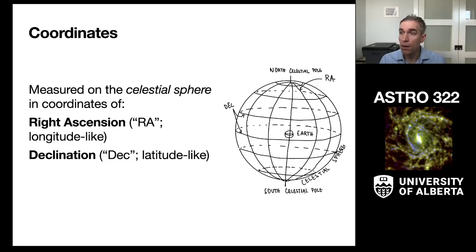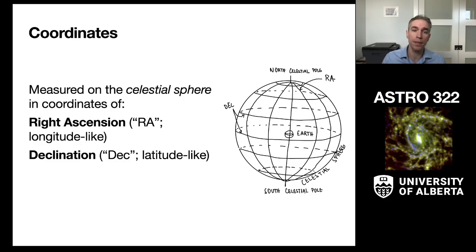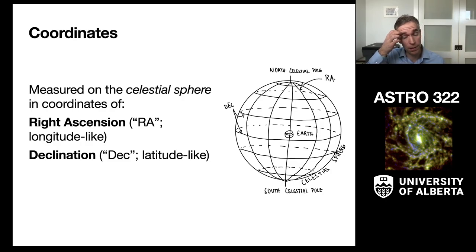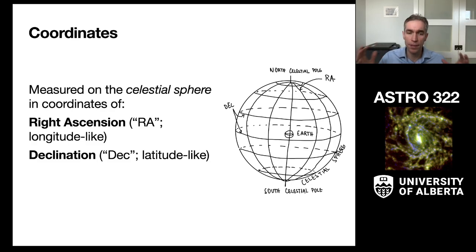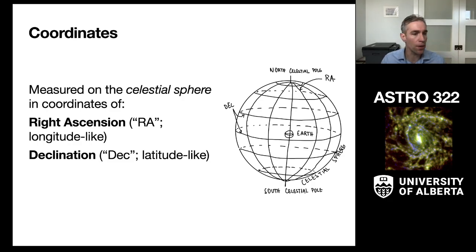The coordinates of the Gaia data appear in the right ascension and declination system that we introduced in the observation lecture. Right ascension, or RA, is a longitude-like coordinate, and declination — also abbreviated as dec — is a latitude-like coordinate. Together they describe the positions of stars on the celestial sphere in angular coordinates.